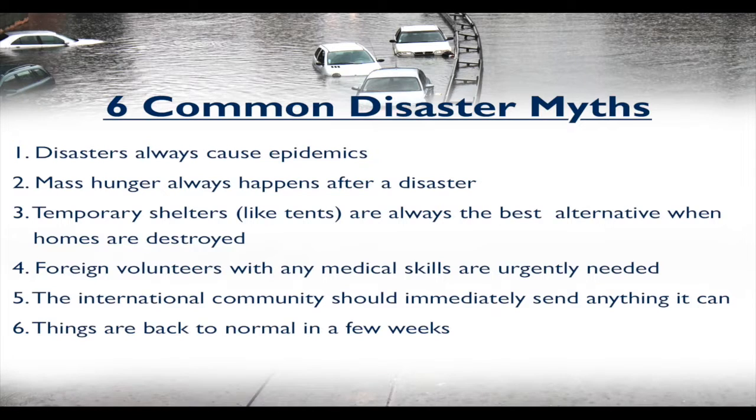The second most common disaster myth is that mass hunger always happens after a disaster — also very rarely the case. Countries that have difficulties feeding their population or a very tenuous food distribution system before the disaster may be tipped over the edge, but rarely do we see mass hunger or starvation in most disasters. The exception is drought, where long-term drought and famines commonly occur, most often in Sub-Saharan Africa.